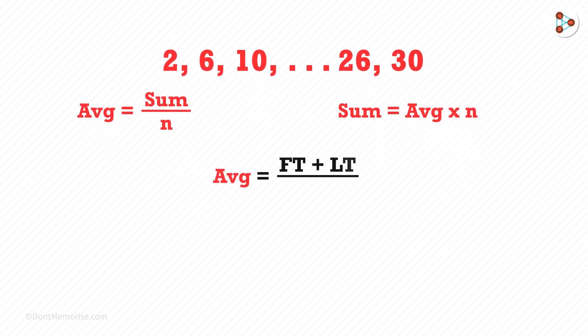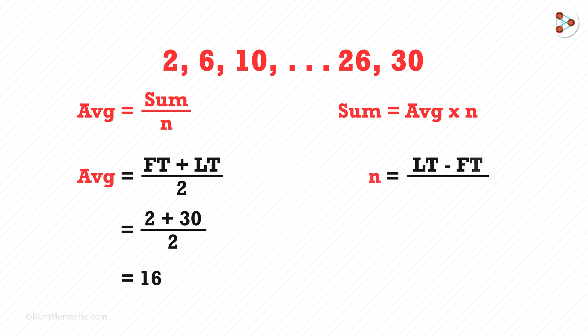Average is first term plus the last term divided by 2, which we get as 16. Number of numbers is last term minus first term divided by the difference plus 1. By solving this we get the answer as 8.